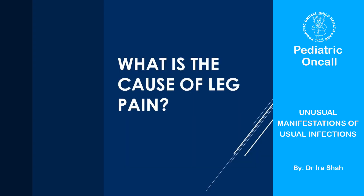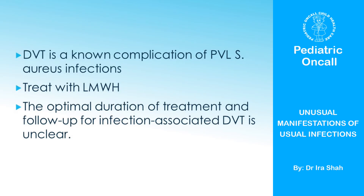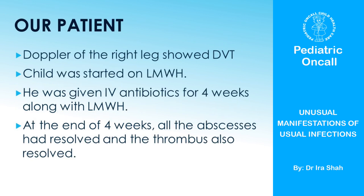But now he had pain in the right leg with osteomyelitis there. What is the cause of the leg pain? We need to keep in mind that in Staphylococcus aureus — especially PVL Staph — there is a high risk of deep vein thrombosis, which needs to be treated with low molecular weight heparin. The duration of LMWH is not established. We did a Doppler in our patient and found a DVT, so he was started on LMWH. We gave him antibiotics for four weeks, and at the end of four weeks everything was resolved. The reason for presenting this case is that when you see a lot of abscesses, you need to decide which antibiotic covers PVL Staph and to look for leukopenia, high ESR, and high CRP as clues.